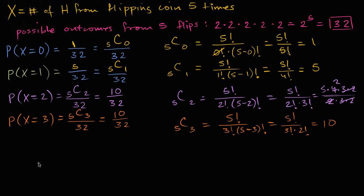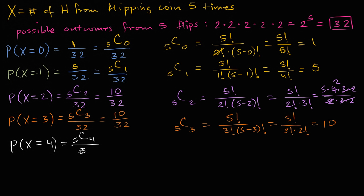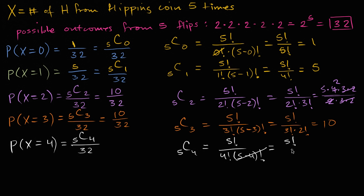Two more to go, and you can start to see a symmetry: 1, 5, 10, 10... The probability that X equals four: out of five flips, four of them are heads, over 32 equally likely possibilities. Five choose four equals five factorial over four factorial times one factorial, which equals five factorial over four factorial, which equals five. So P(X=4) = 5/32.